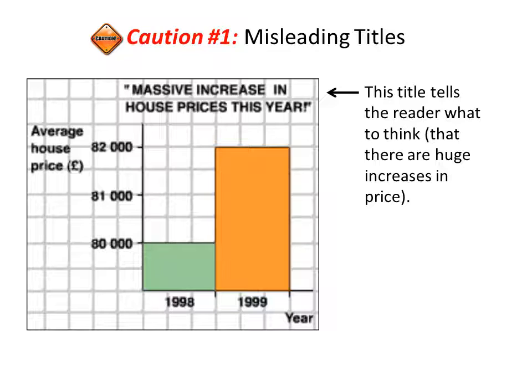When you're constructing a graph, you want to make sure that your title is pretty benign. It just describes what the graph is trying to depict. You're not trying to put a bias one way or the other.